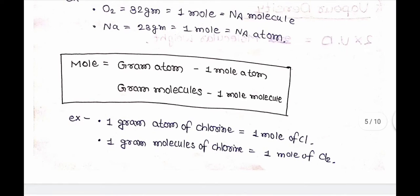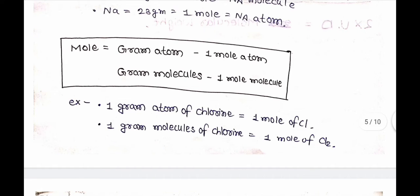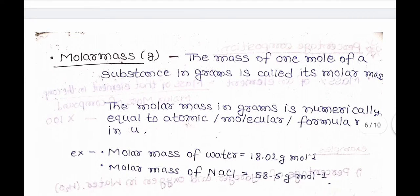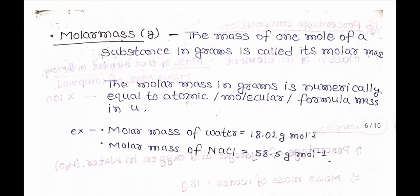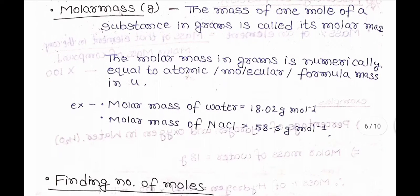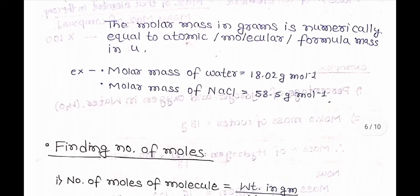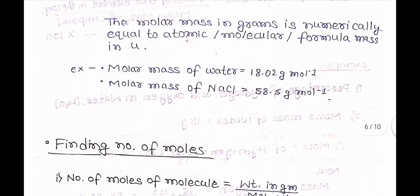Remember: gram atom = 1 mole atom, and gram molecule = 1 mole molecule. Example: if 1 gram atom of chlorine is written, it is equal to 1 mole of chlorine. And 1 gram molecule of chlorine means 1 mole of Cl₂. Molar Mass: the mass of 1 mole of a substance in grams is called its molar mass. The molar mass in grams is numerically equal to atomic, molecular, or formula mass in U. Example: molar mass of water = 18.02 g/mol, and molar mass of NaCl = 58.5 g/mol.